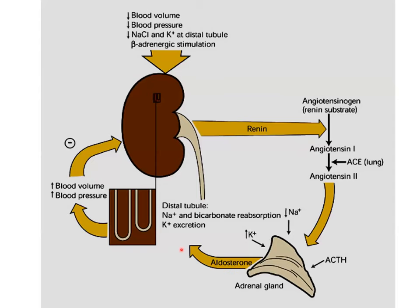Moving to mineralocorticoids: these are regulated mainly by the renin-angiotensin-aldosterone system. Angiotensin 2 regulates the cortical mineralocorticoid effect. ACTH, decreased serum sodium, or elevated potassium also affect aldosterone release. Aldosterone acts on the distal tubule: sodium and bicarbonate reabsorption increase and potassium excretion occurs, increasing blood volume and preload. Angiotensin 2 also directly increases peripheral resistance, raising blood pressure. Renin release is regulated by blood volume, blood pressure, filtered sodium/potassium in the distal tubule, and beta-adrenergic stimulation.